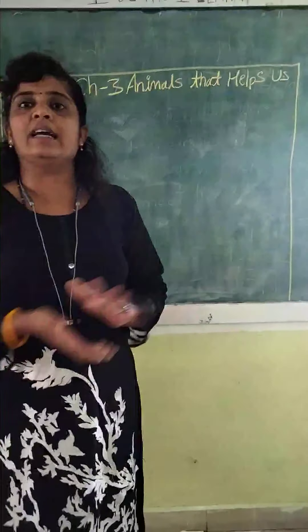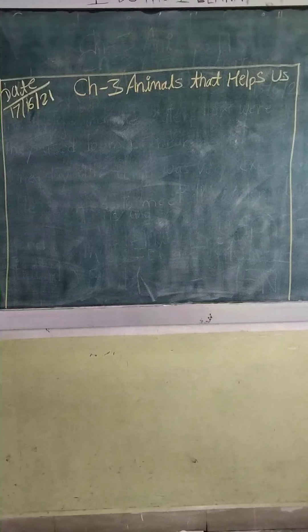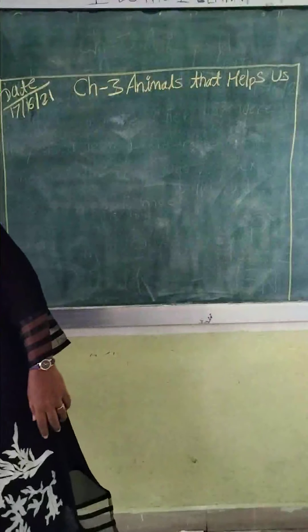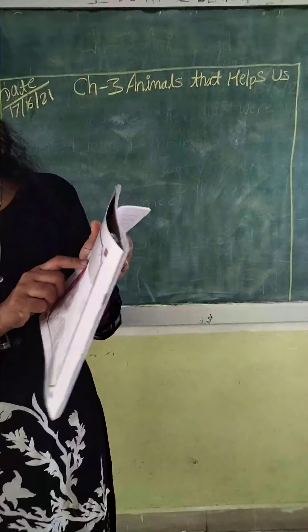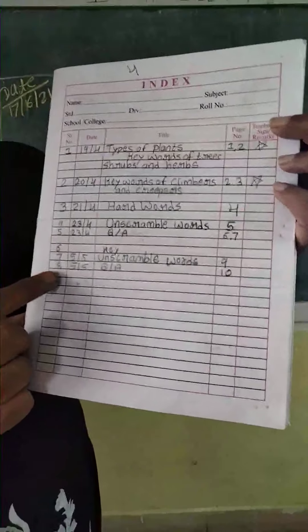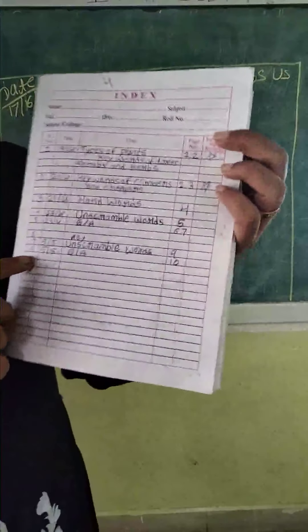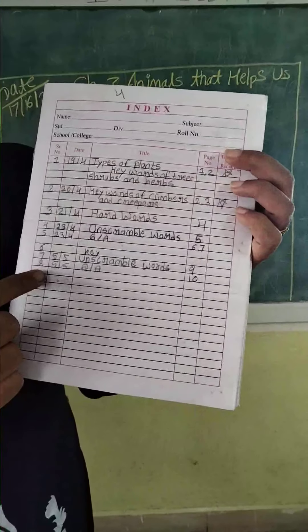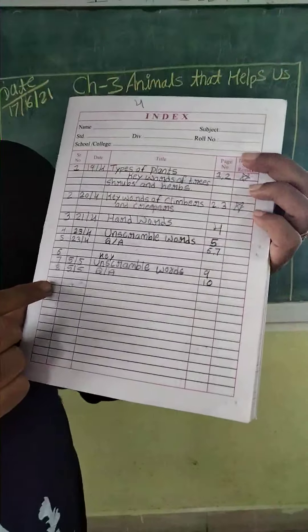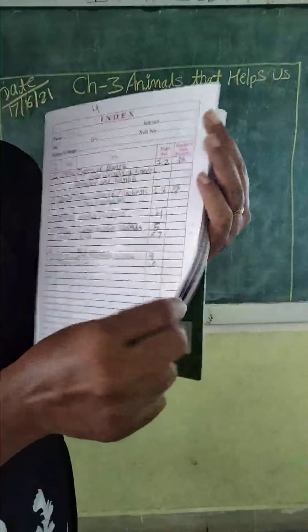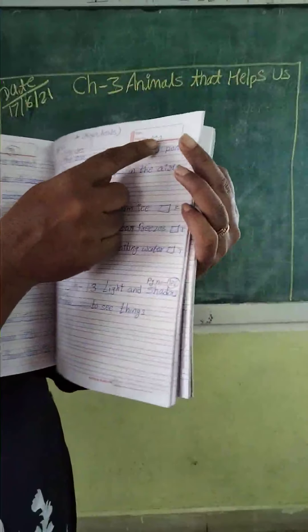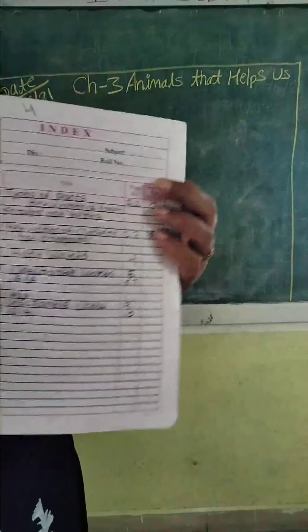If any letters are not visible to you, I will send an image. This is my number 4 notebook. First, you have to write the serial number here. Today's date is the 17th, so write the 17th date. Please maintain your index.